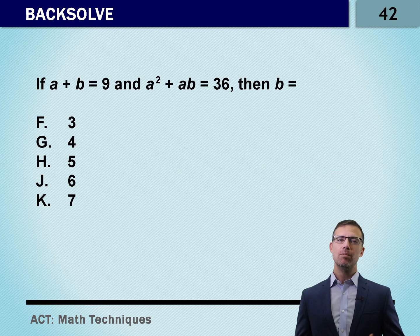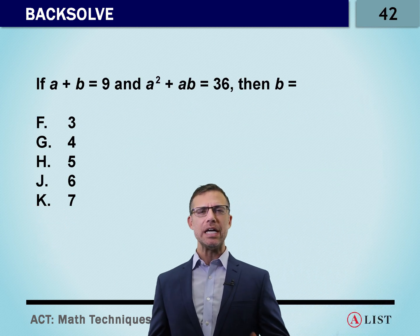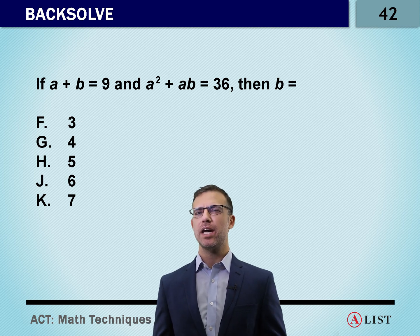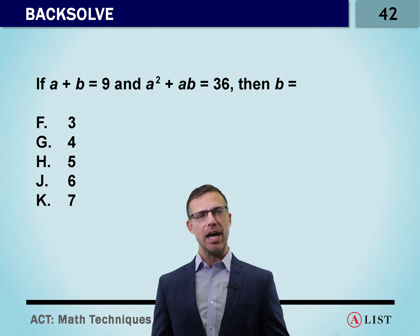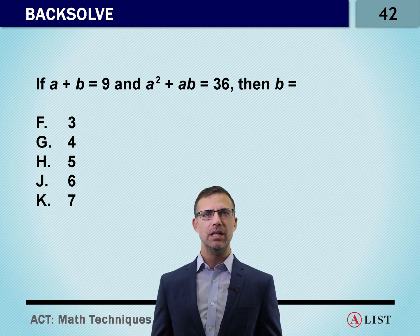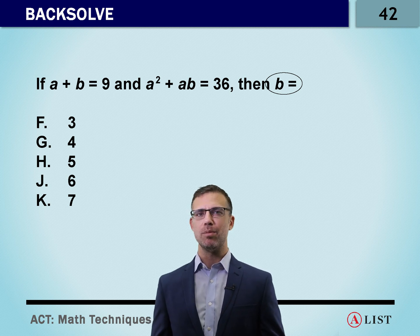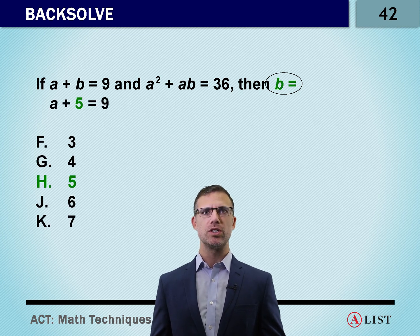Let's take a look at another one. When we have variables in a question, our instinct might be to plug in to replace the unknowns, but that's not always the case. If A plus B equals 9 and A squared plus AB equals 36, then what is B equal? Notice at the end of this question we want a specific value for B — not the relationship, but B as a number. So now we've got five answer choices. Where do we start? We start in the middle.